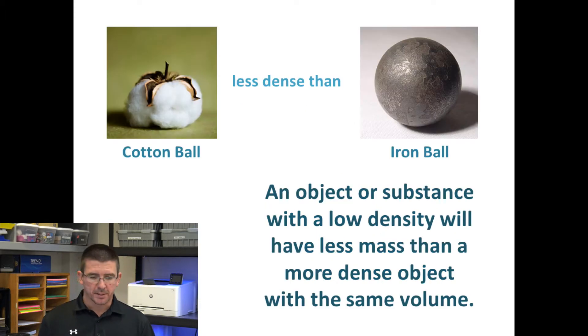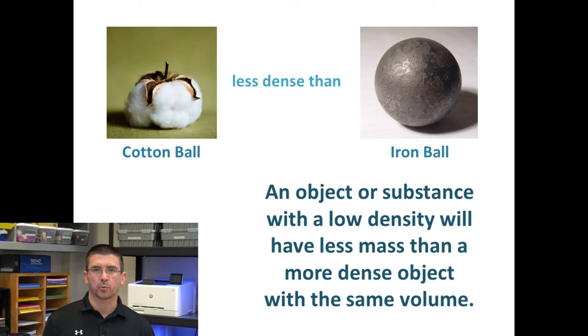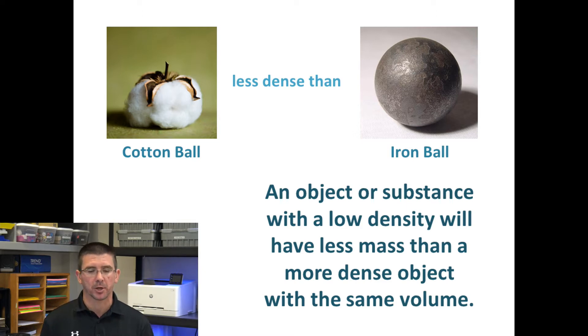For instance, an object with low density — if we pick up a piece of it — it's going to feel fairly light, whereas an object with a higher density has more matter packed into that certain space, so it's going to feel heavier by comparison.